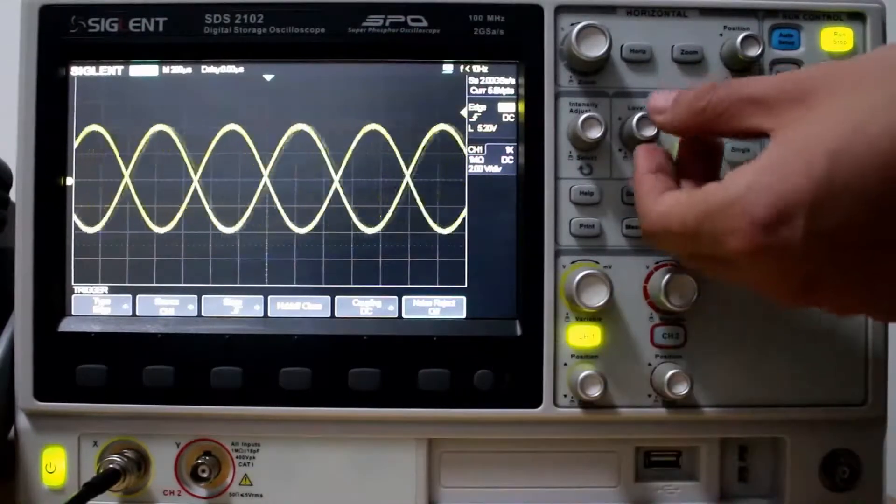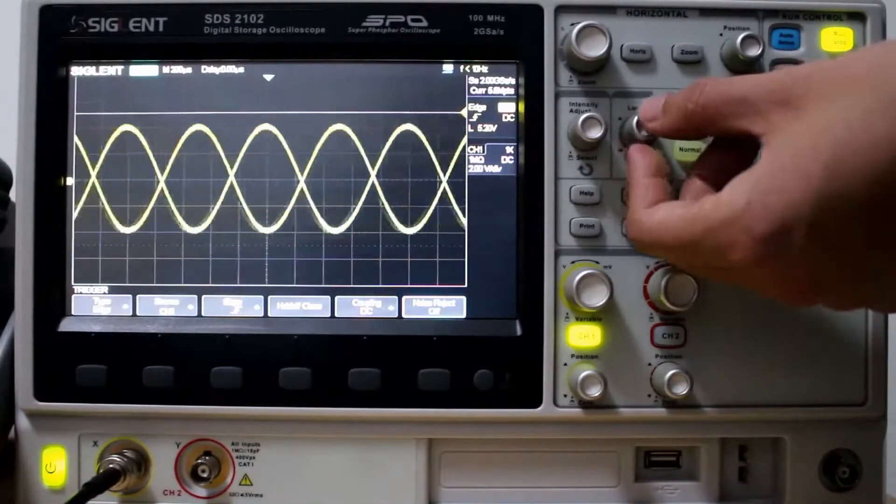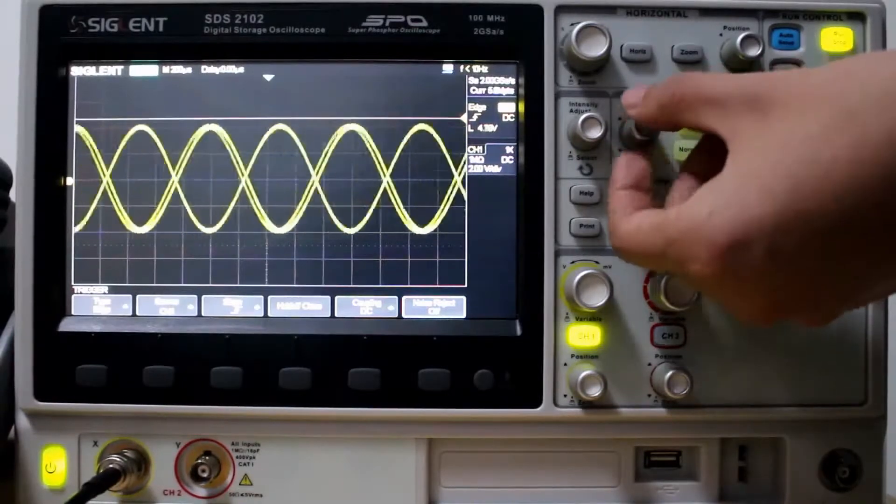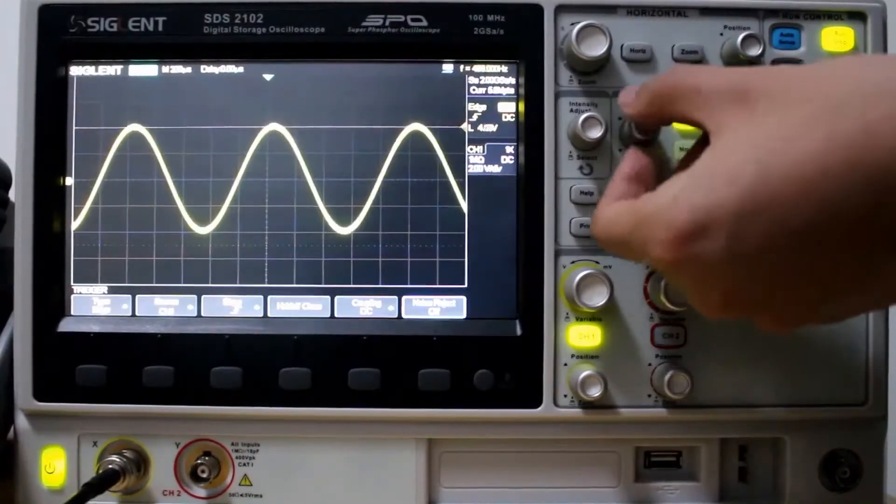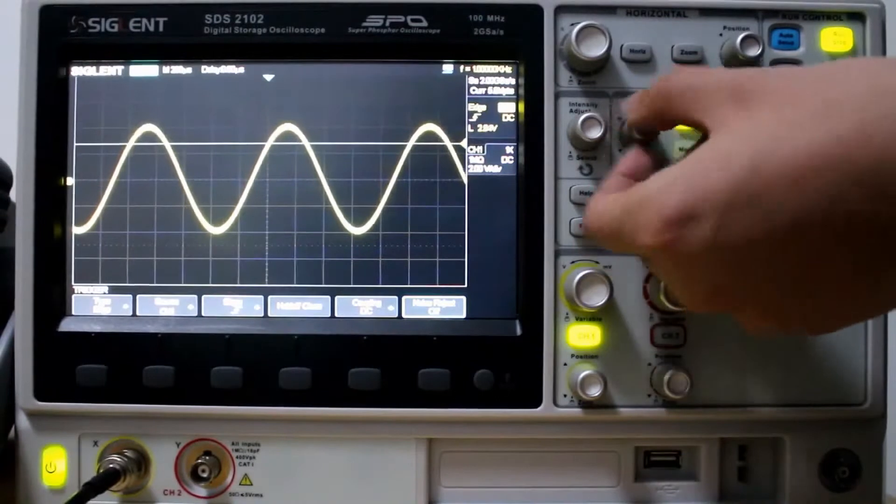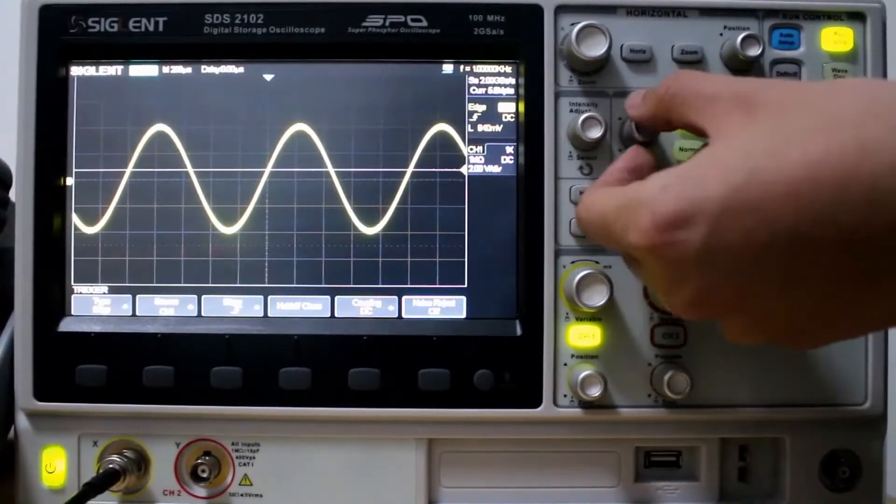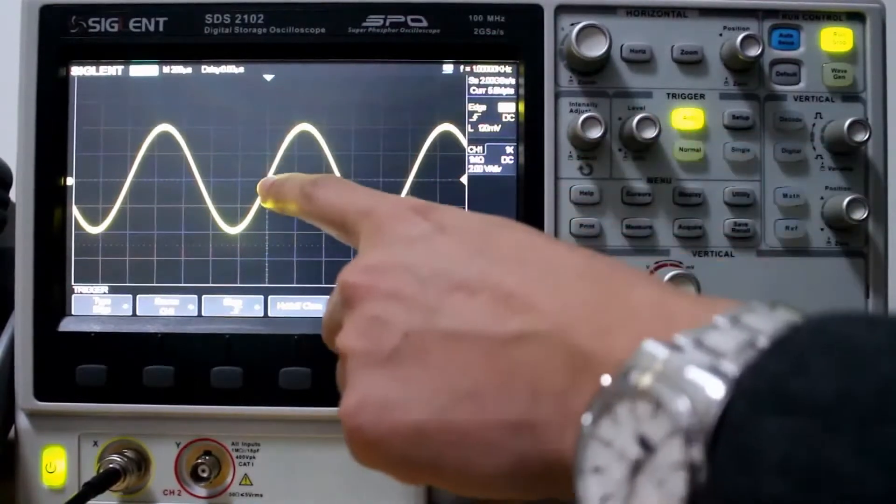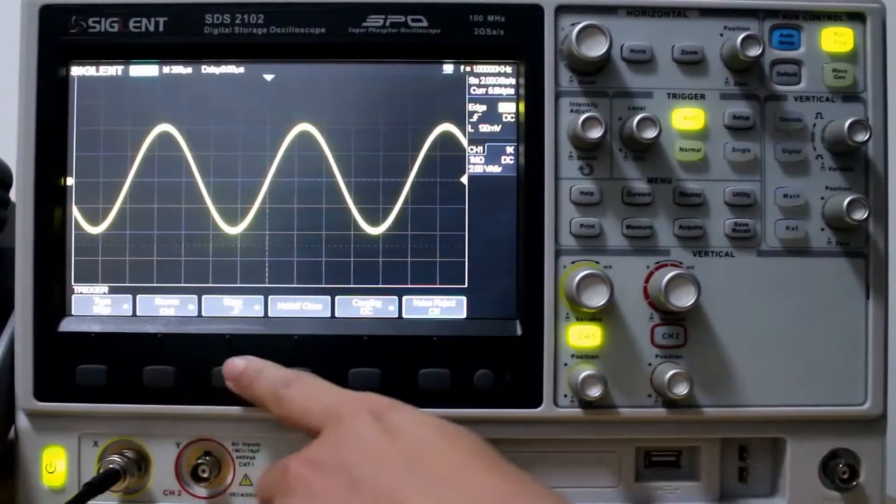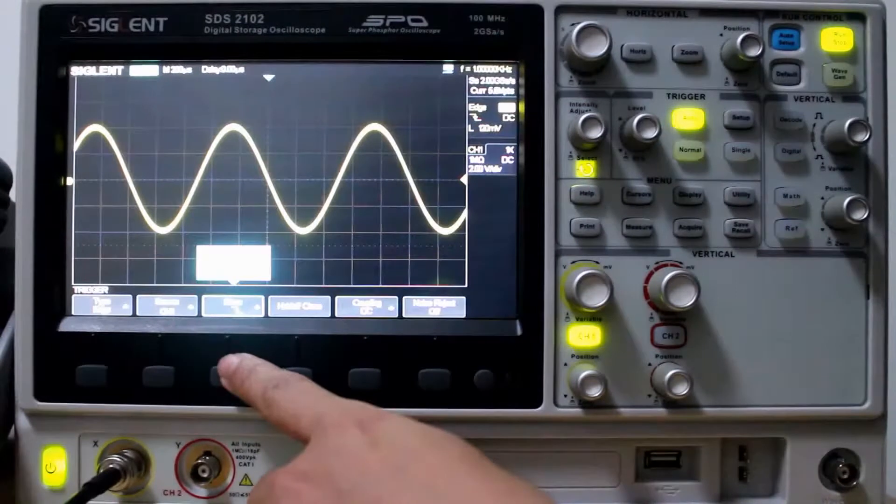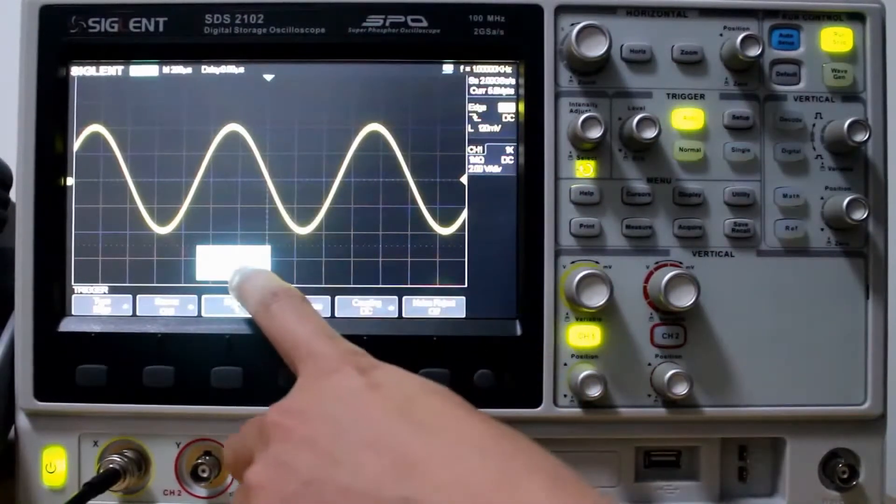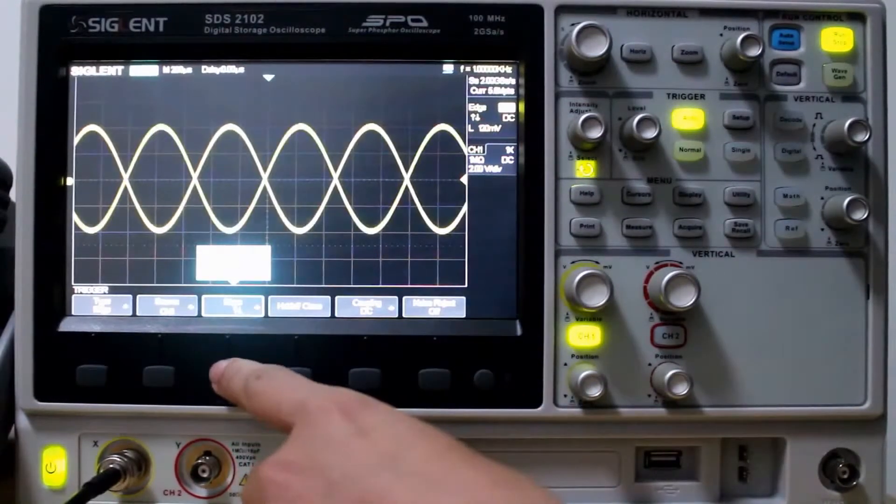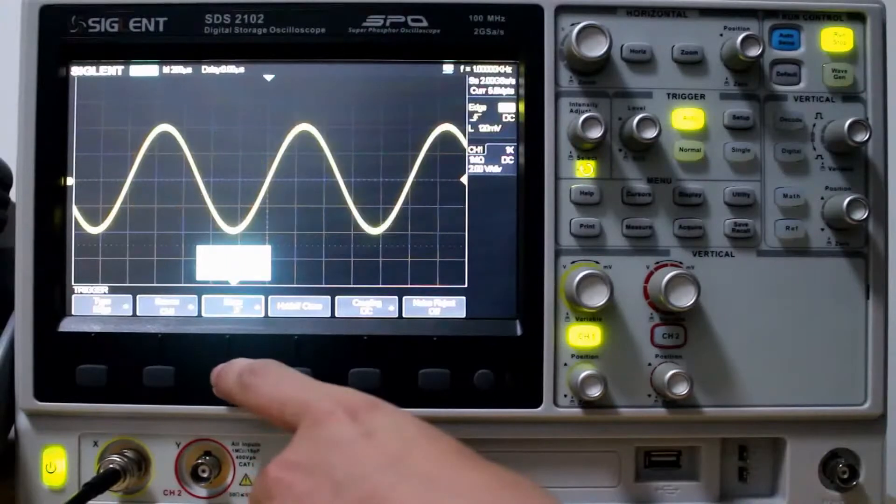So our signal's looking pretty good. We can also adjust the trigger height, trigger level. We can go down there. Now we're triggered. Push the knob. It'll zero out. Now we set it to Falling. Both. Rising, Falling, Rising.